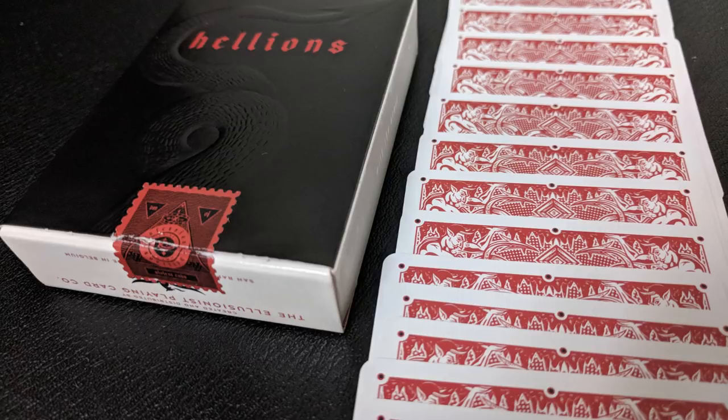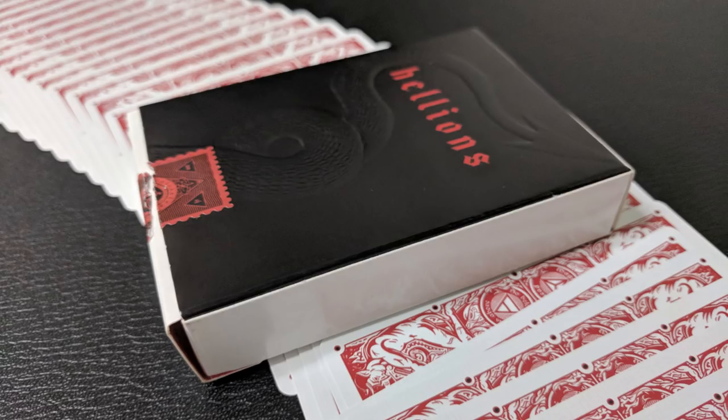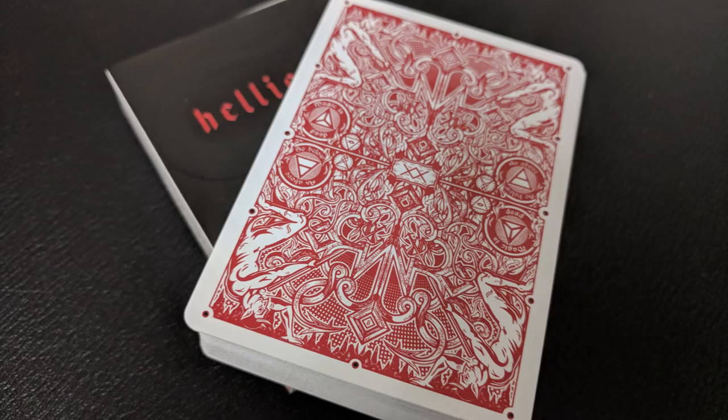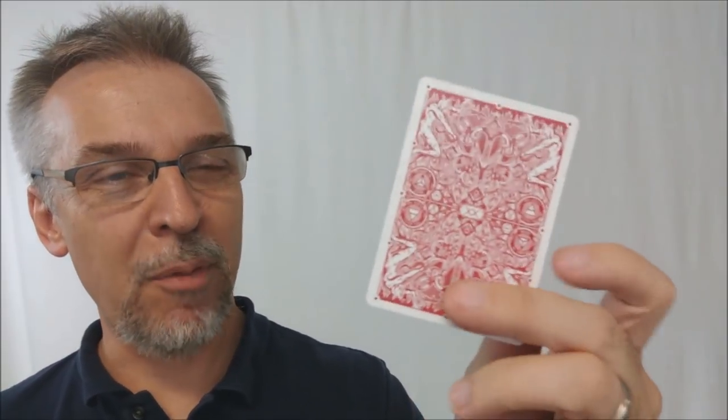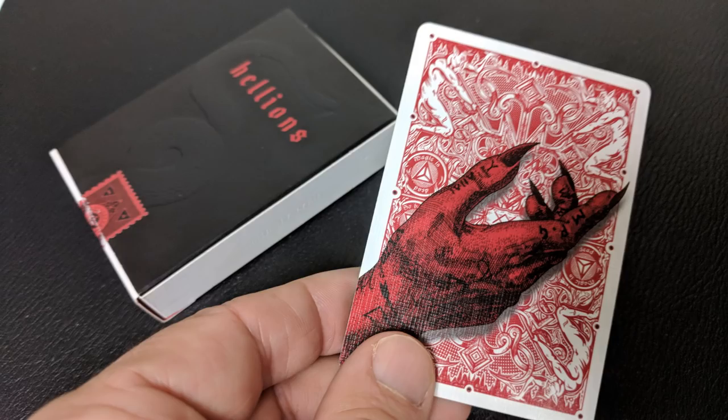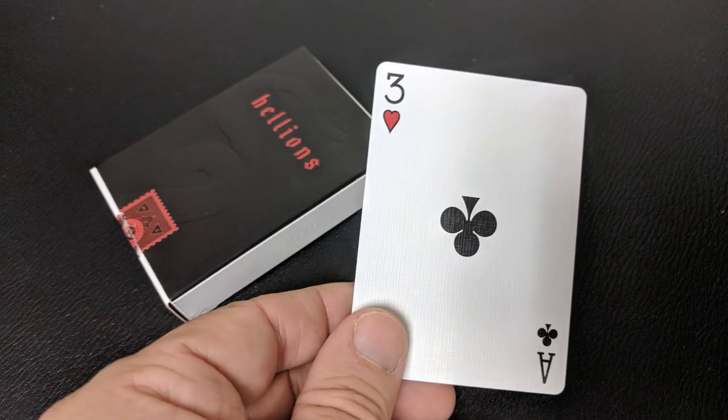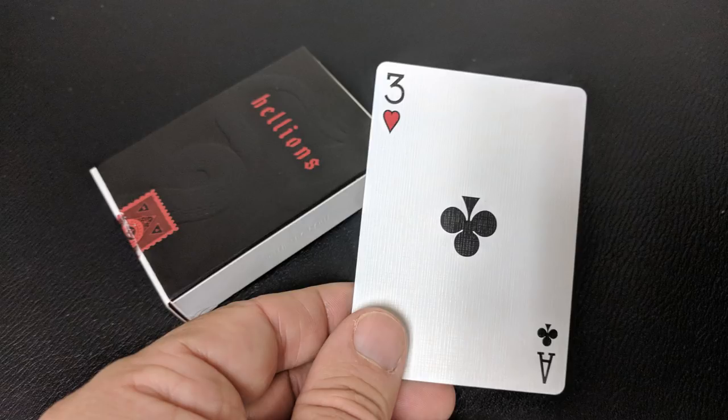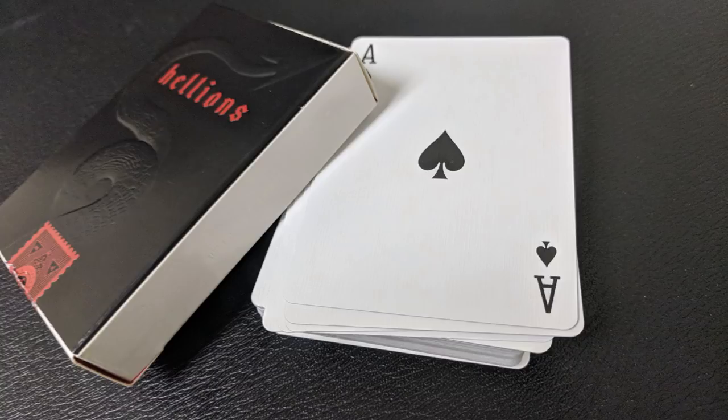Some people have asked if the back design is a marked deck. It is not a marked deck, but Daniel Madison did say that he put some ways built into it that it could be easily made into a marked deck if you wanted it to be. With this deck, you're going to get a double backer. It's the back design on one side and on the other side, it's a devil's hand. Your second extra card is a gaff card that has dual pips. And you would use this in Michael Skinner's ultimate three card monte.